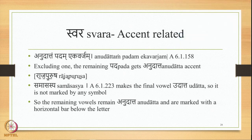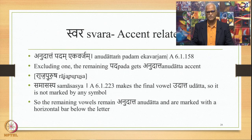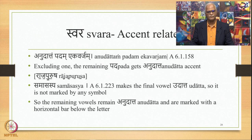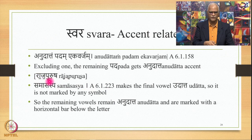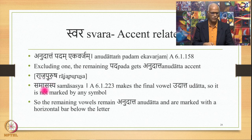Then there is a Paribhasha Sutra related to accent: Anudattam Padam Ekavarjam 6.1.58, which means 'excluding one, the remaining pada gets Anudattam accent.' For example, in Raja Purusha, Samasasya 6.1.2.23 makes the final vowel Udattam — the A in 'sha' is Udattam, unmarked in writing convention. The remaining vowels A, A, U, and U all become Anudattam, marked with a horizontal bar below the letter. All four vowels are marked Anudattam because of this Paribhasha.